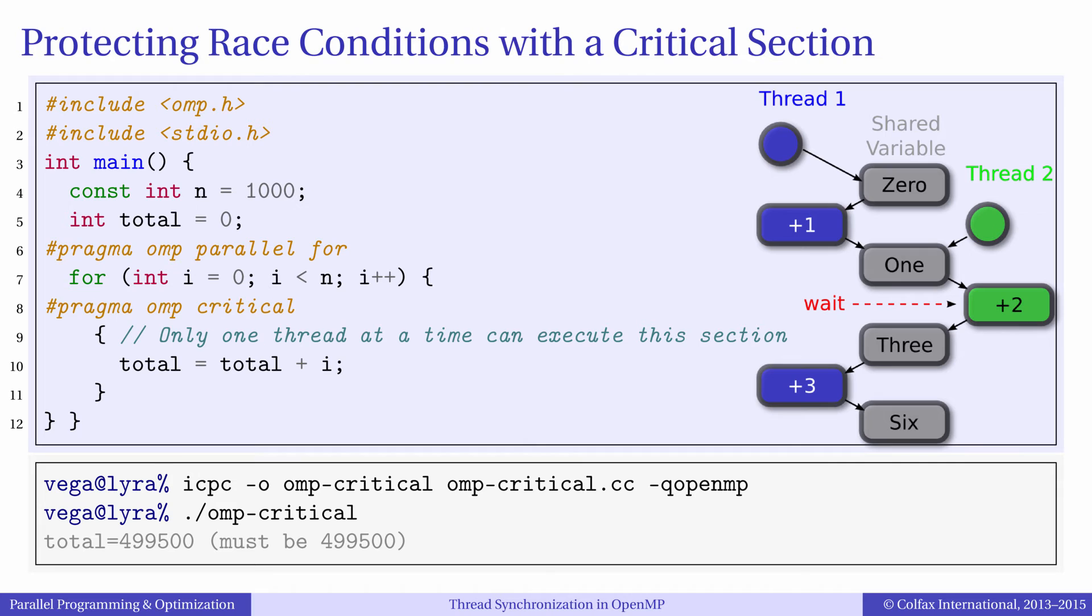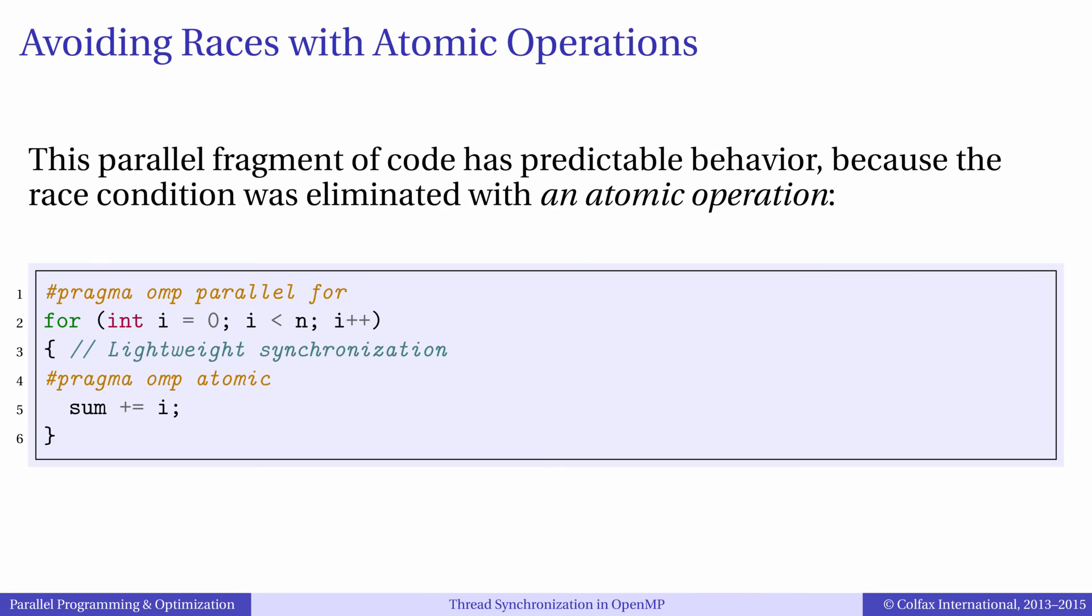Critical sections are a heavyweight mutex. They allow the programmer to protect arbitrarily large code sections however the performance overhead of critical sections is relatively large.